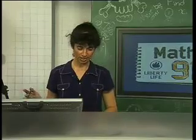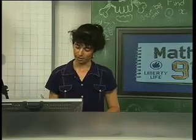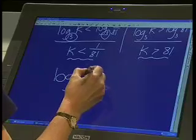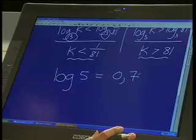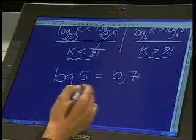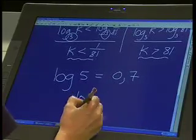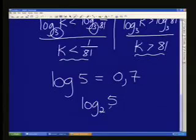And then the other question I have is another log question. If log 5 is equal to 0.7, what would the log₂5 equal to?